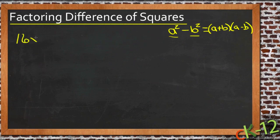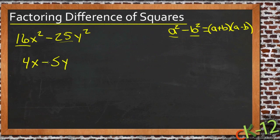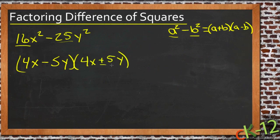Let's try 16x squared minus 25y squared. The square root of 16 is 4, the square root of x squared is x, the square root of 25 is 5, and the square root of y squared is y. So we write that down with minus in between, write it again, and put plus in between, and we're done.